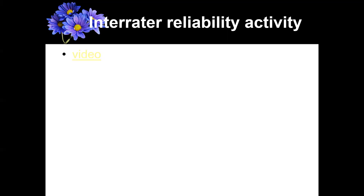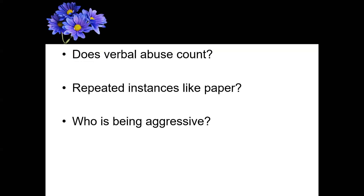This illustrates what the problem can be if you don't clearly define your measures when using observation. I can't show the video because of copyright, but what exactly qualifies as an aggressive behavior? There was a part in the beginning where the kid just walks by and someone makes a snide comment to him — does that count as aggression? Some people probably counted it, some probably didn't.